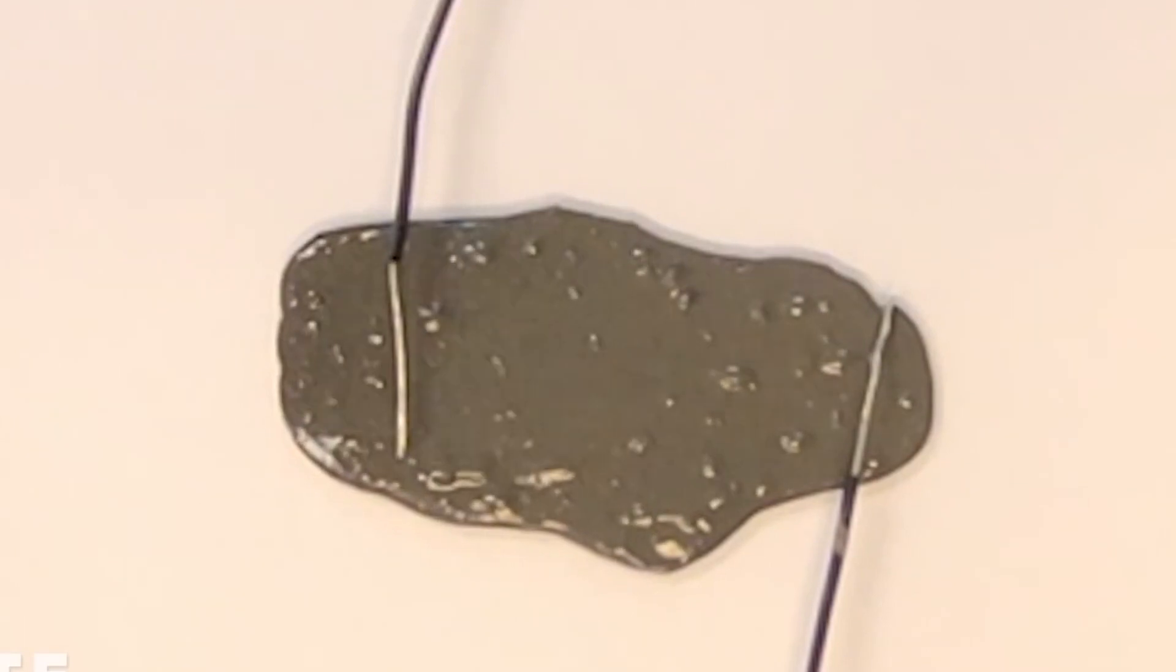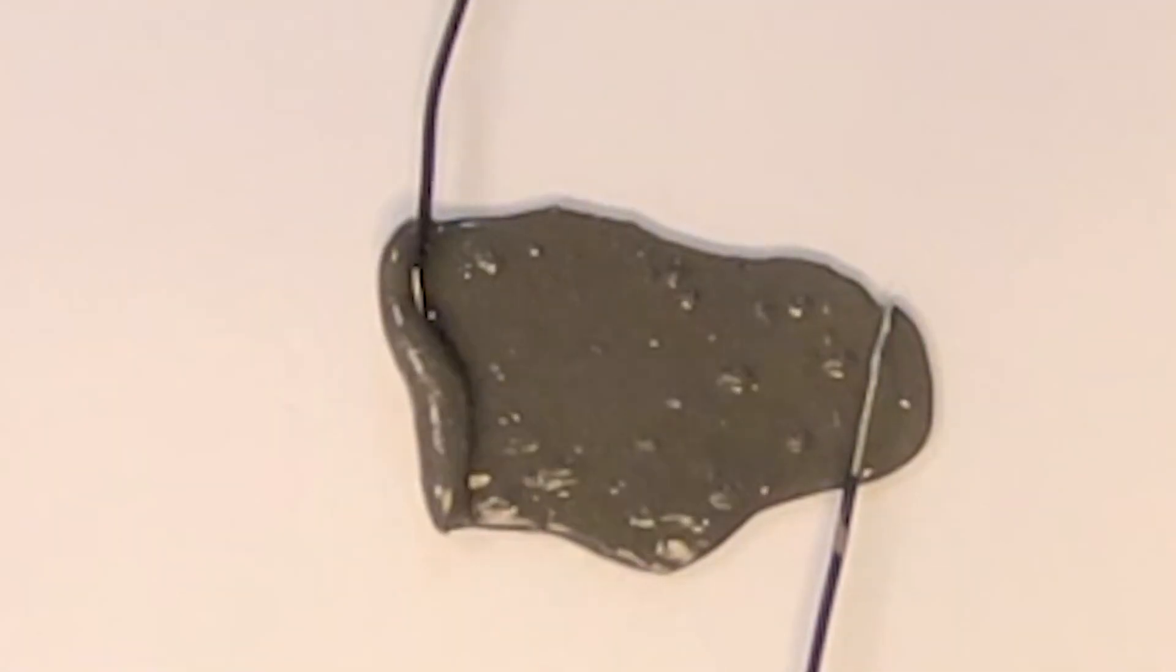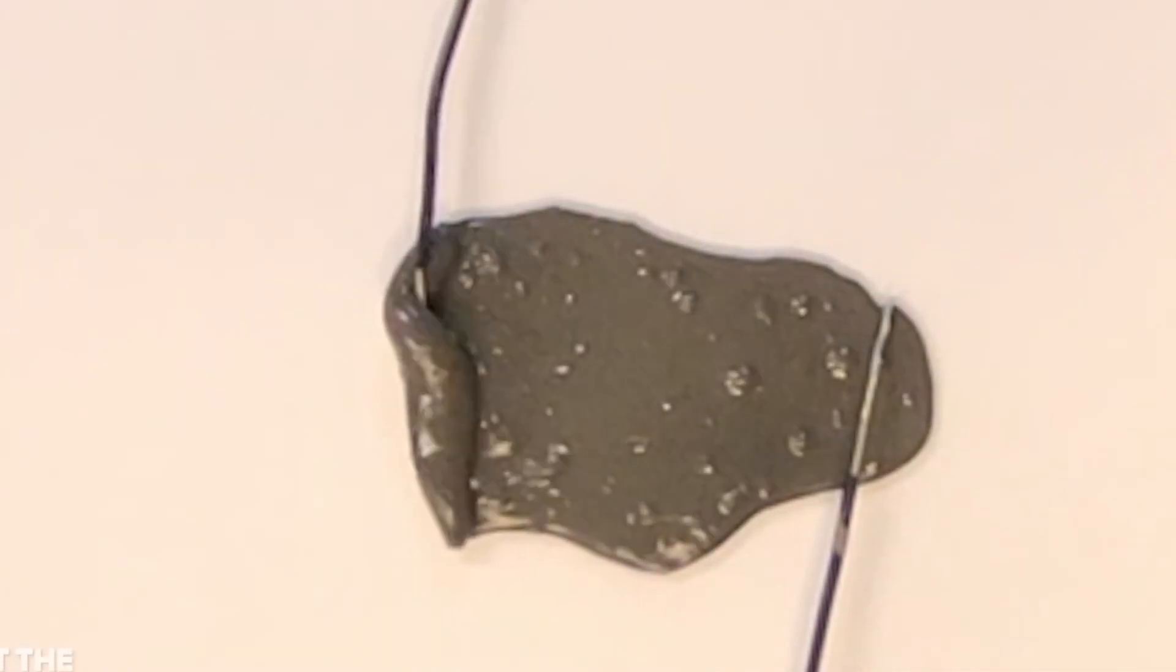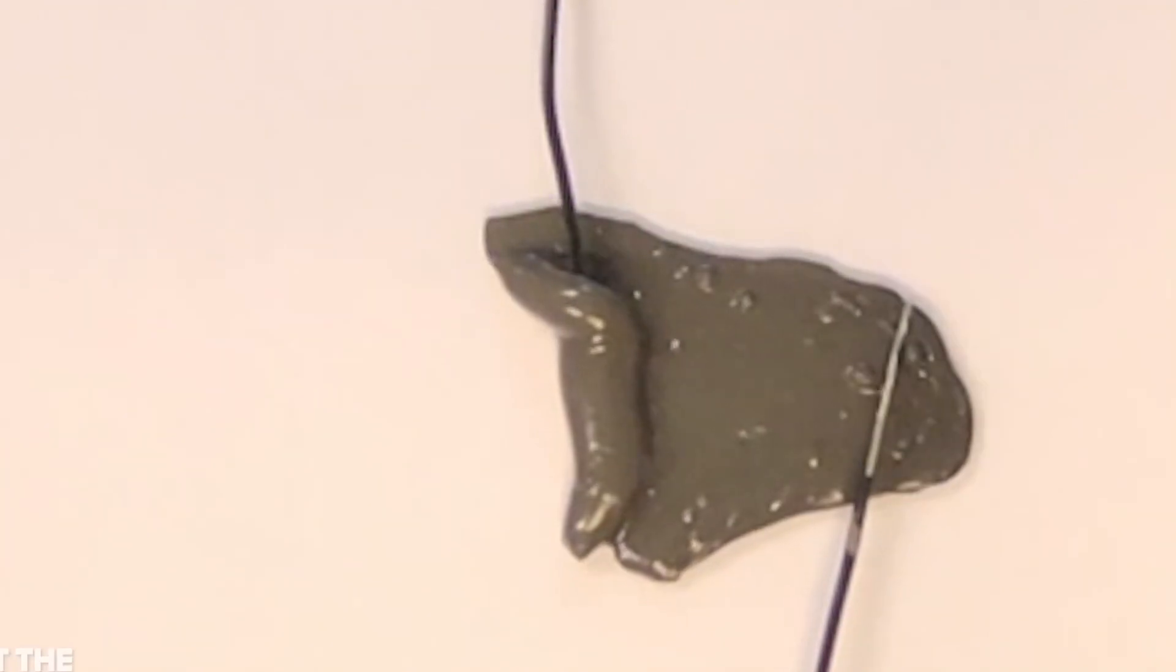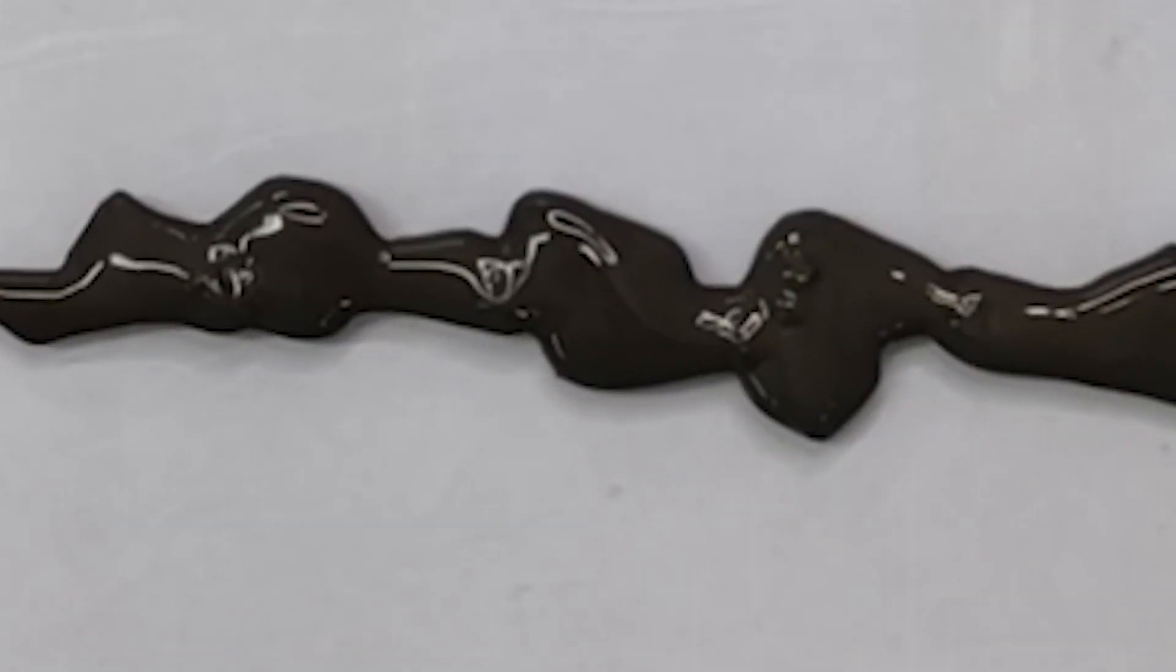A squad of Chinese researchers has built a magnetic slime that can be reconfigured on the fly to perform various robotic functions. The group outlines their slime, its potential applications, and the steps they took to make it less hazardous in a study published in the journal Advanced Functional Materials.